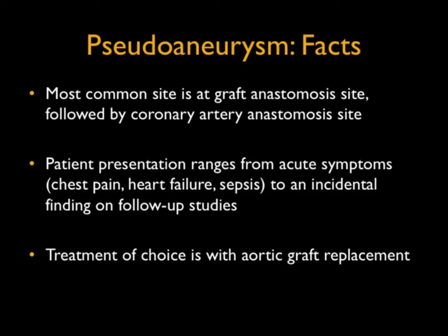Patients present with a range of symptoms, from acute symptoms like chest pain, heart failure, or sepsis, to an incidental finding on a post-op study. We've picked up many pseudoaneurysms — some small, some very large — in asymptomatic patients. Treatment is typically surgery; there's no stent treatment typically. Aortic root replacement is what's usually done, with patch repairs reserved for small pseudoaneurysms.